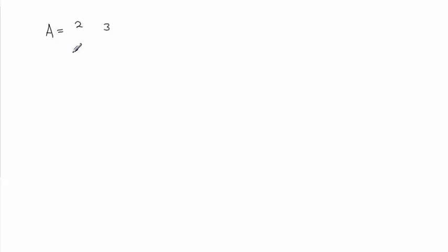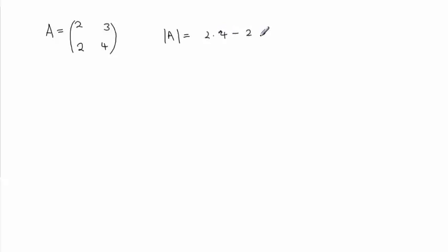Let's say we're given matrix A = [2, 3; 2, 4]. Whenever we're given a matrix, we've got to check whether it has an inverse. We calculate the determinant of A: that's 2×4 minus 2×3, which equals 8 minus 6, equals 2. So this matrix is non-singular; the determinant is not equal to zero.